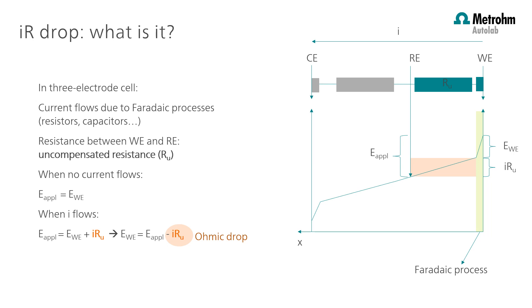What does the potentiostat need to do to compensate for this resistance? Basically, it applies a slightly higher potential between the working electrode and the reference electrode so that the actual potential at the working electrode is the one set point in the software. And this is called IR drop compensation.